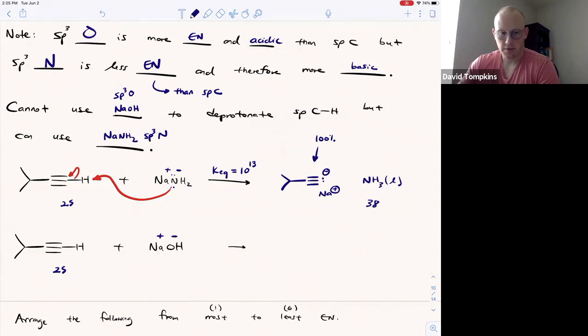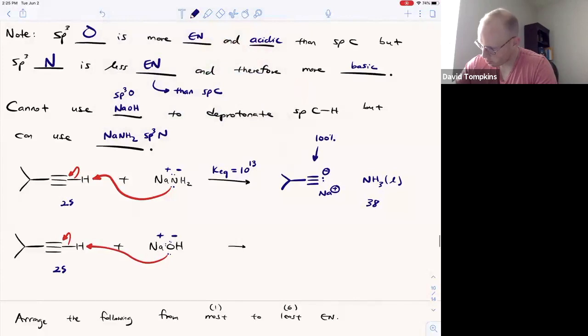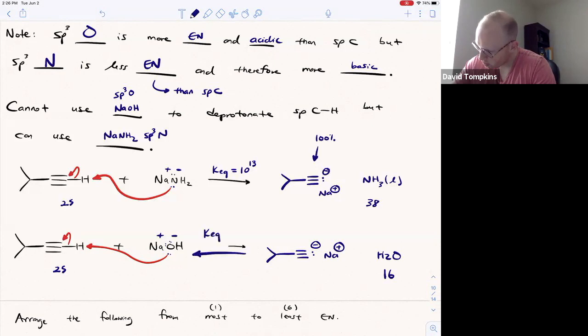And if you use sodium hydroxide to deprotonate, it's a vastly different result. We're now generating the same acetylide ion but get a conjugate acid of water. And the sp3 oxygen is far more acidic, the pKa of 16. So now Keq is a very small number, 10 to the negative 9,